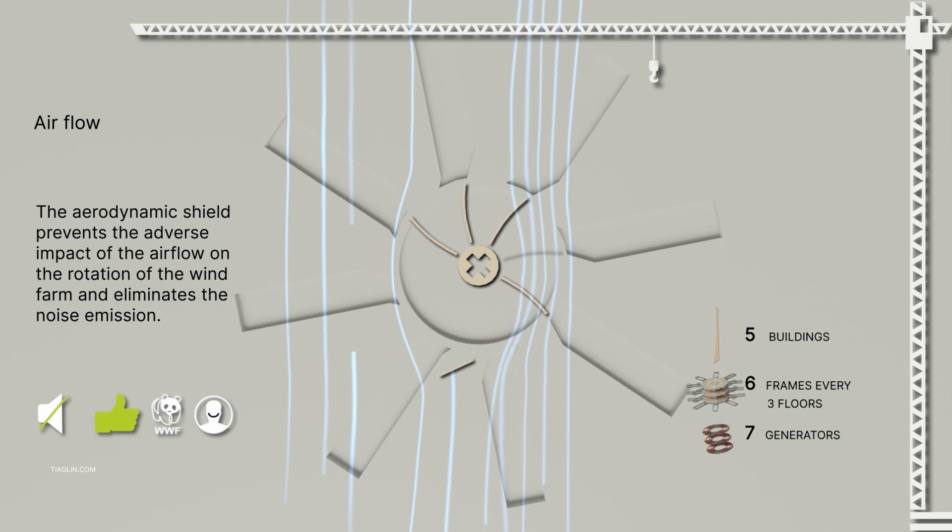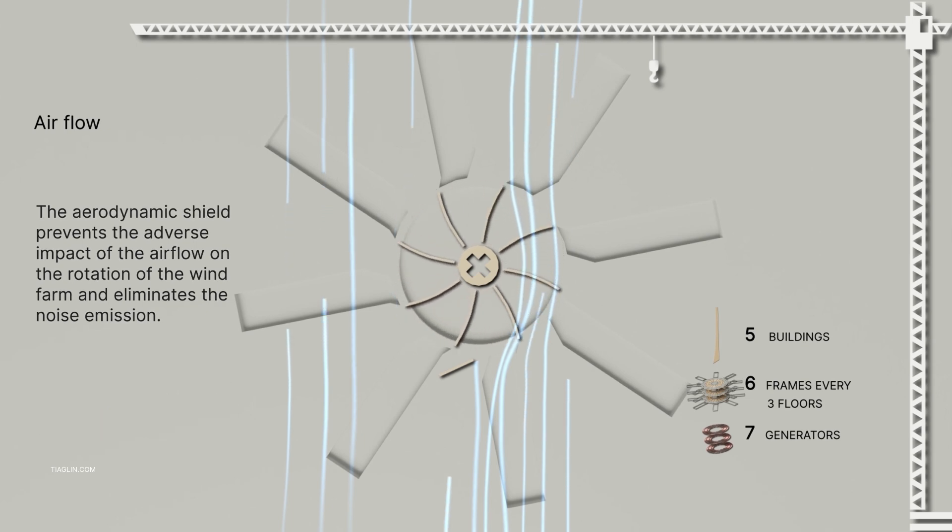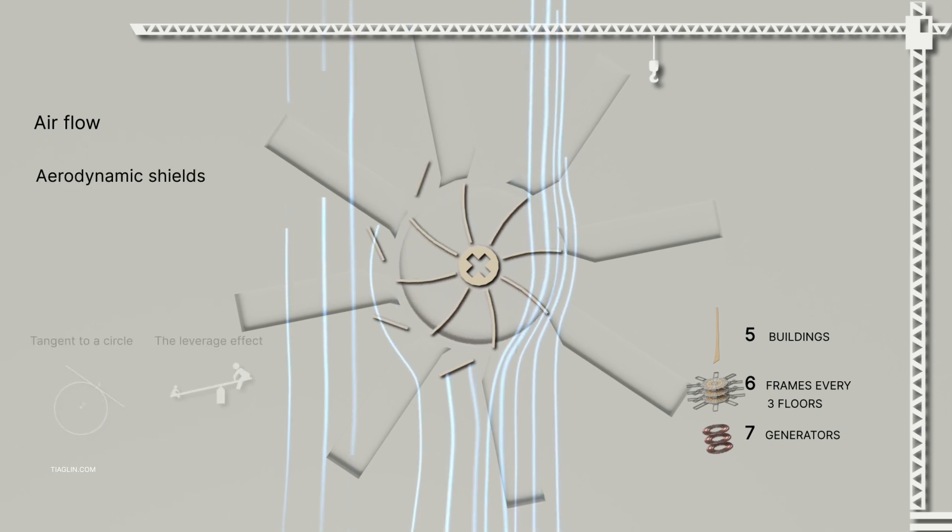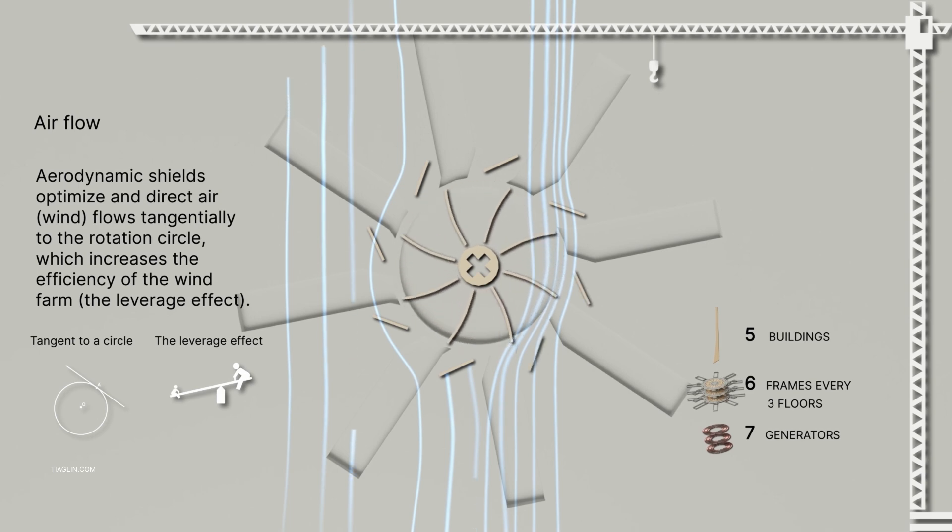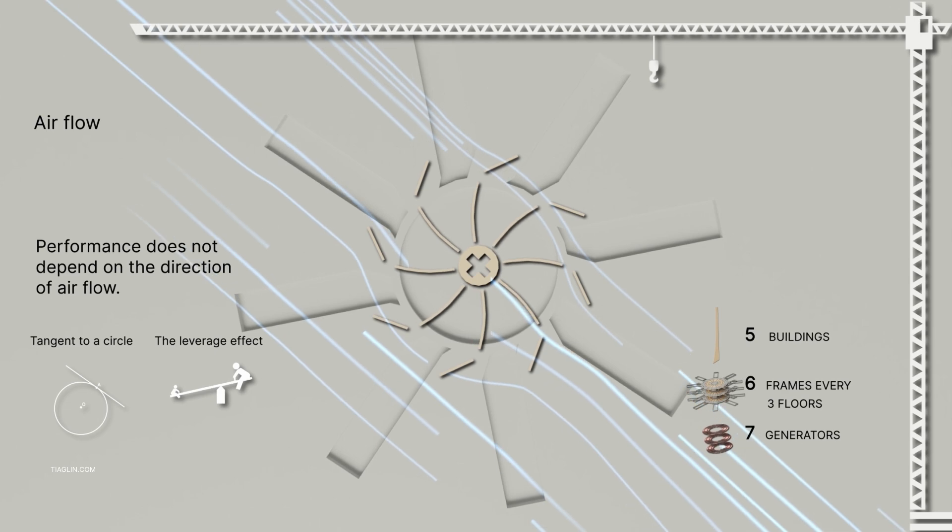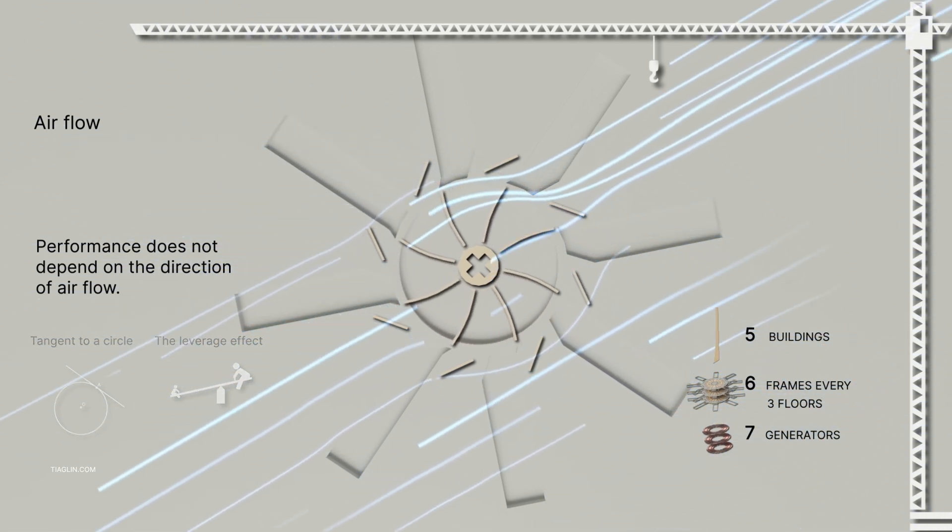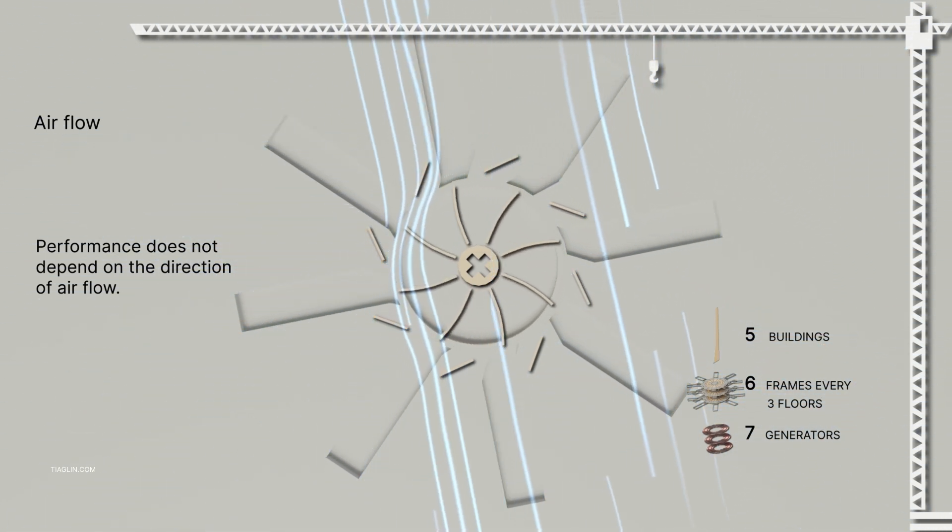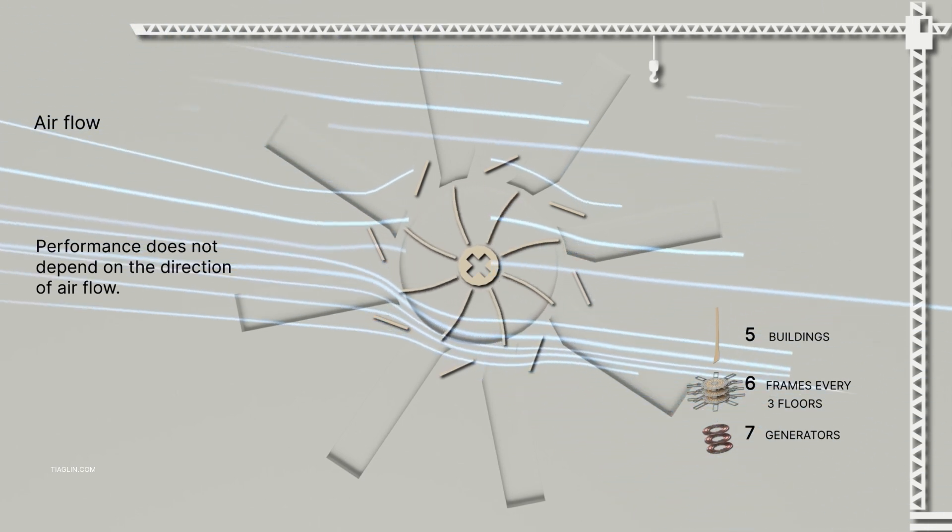The aerodynamic shield prevents the negative impact of the airflow on the rotation of the wind farm and eliminates the noise exposure. Aerodynamic shields optimize and direct the air flows at a tangent to the rotation circle, which increases the efficiency of the wind farm, the so-called leverage effect. Performance does not depend on the direction of airflow.